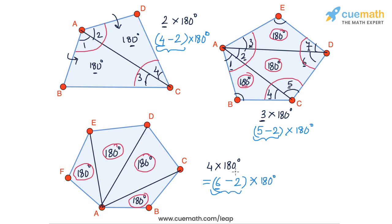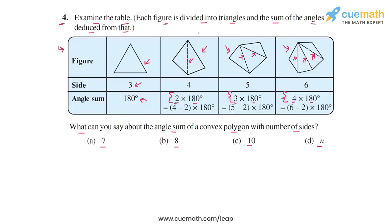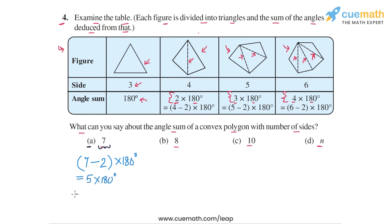This same logic can be applied to any polygon. For a convex polygon with seven sides, we do 7 minus 2 to get five triangular parts, and the angle sum in each part is 180 degrees. So the total angle sum is 7 minus 2 into 180, or 5 into 180, which equals 900 degrees. For any convex seven-sided polygon, the angle sum is 900 degrees.